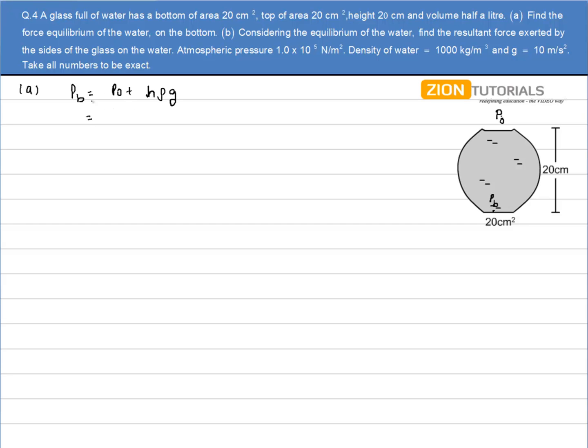And I have to calculate the force, so I'll multiply both sides by area of cross section. So I have (P₀ + h·ρ·g) into area of cross section will give me the force that is acting on the bottom.